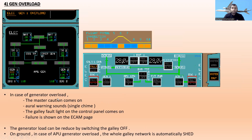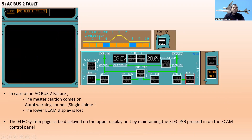The next one is generator overload. In case of generator overload, master caution comes on with a single chime oral warning, and the galley fault light on the control panel comes on in amber. The failure is also shown on the ECAM page — generator one is overloaded. The generator load can be reduced by switching the galley off. On ground, in case of APU generator overload, the whole galley network is automatically shed.